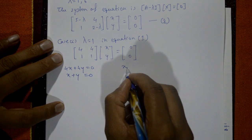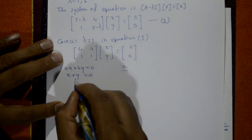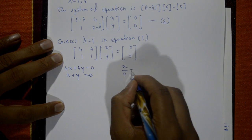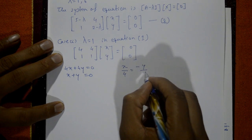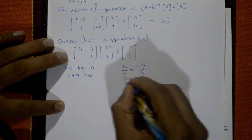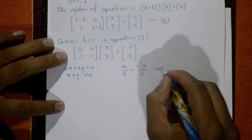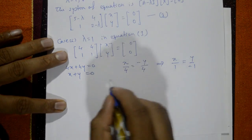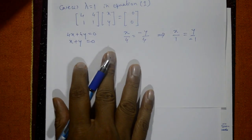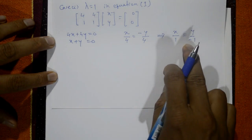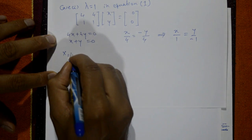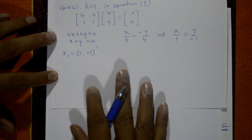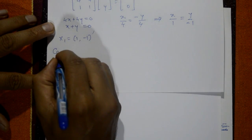Taking either equation: x/1 = y/(−1), so x by 1, y by −1. The first eigenvector is the column matrix [1, −1]. This is x₁.